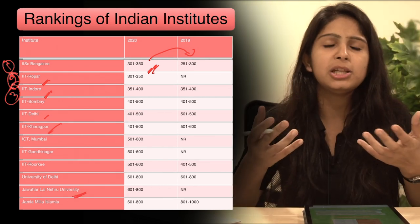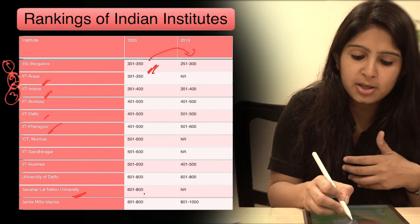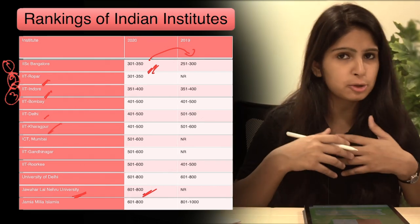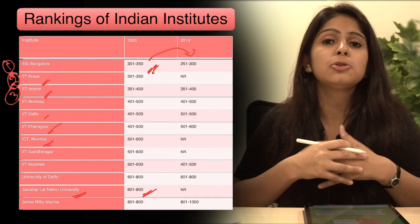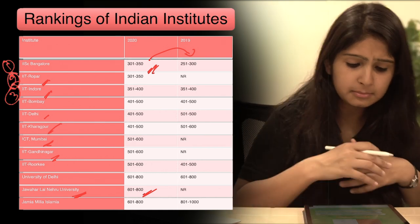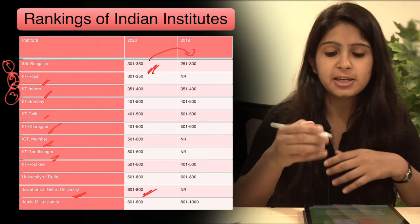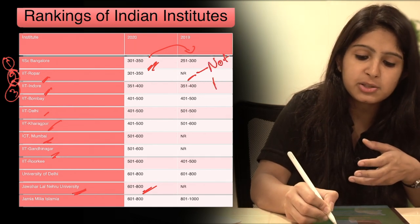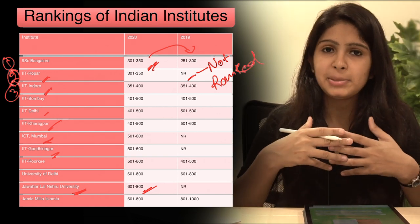So you can see that in this list there are some new entrants like Jawaharlal Nehru University, so we know commonly JNU. JNU has featured in this list in the rank group of 601 to 800, and there are also many new institutes - IIT Ropar as well as ICT Mumbai, i.e. Institute of Chemical Technologies, IIT Gandhinagar, and some other institutes which have featured in this list. So in this table where you see 2019 under NR which means not ranked, so last year these institutes were not ranked but this year they got the ranking, so they are the new entrants in the list.